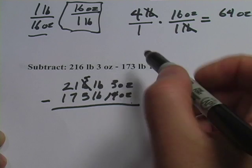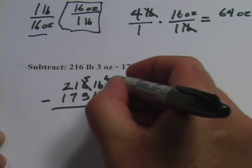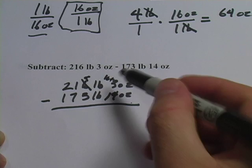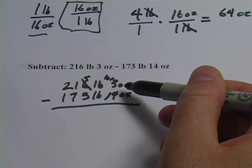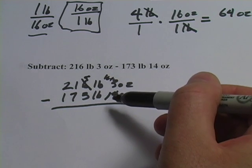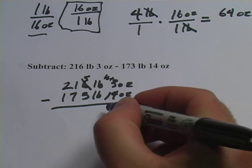So I don't put a 1 here, what I put in is a 16 plus 3. So really this is 19 ounces now minus 14 ounces. Well 19 ounces minus 14 ounces is 5 ounces.